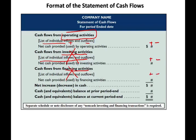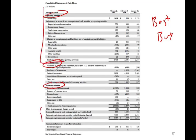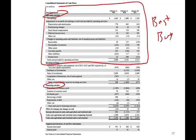The statement of cash flows has three sections: operating, which lists inflows and outflows netted at the end; investing, which we'll work next time; and financing. We net them all out to get the net increase or decrease, add to the beginning cash balance, and find the ending cash. Looking at Best Buy's cash flow statement, the operating section shows positive cash flow for 2019, 2018, and 2017.